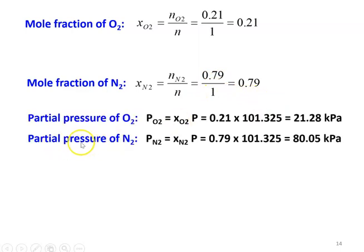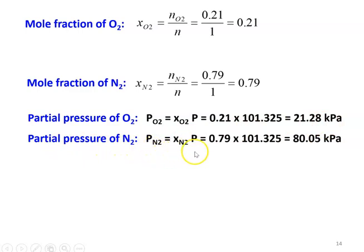The partial pressure of the two gases: partial pressure of O2, PO2 equals XO2 into total pressure of the gaseous mixture — 0.21 into 101.325 equals 21.28 kilopascal. Partial pressure of N2, PN2 equals XN2 into total pressure — 0.79 into 101.325 equals 80.05 kilopascal.